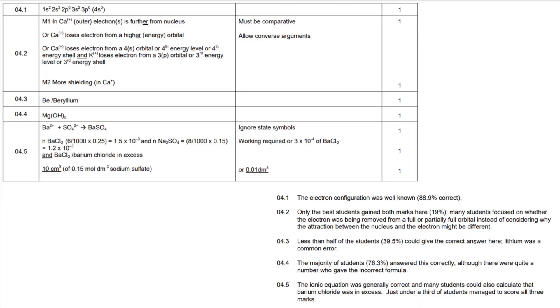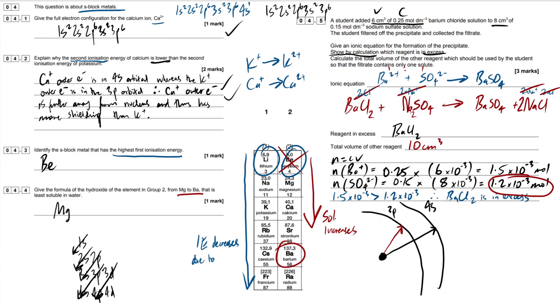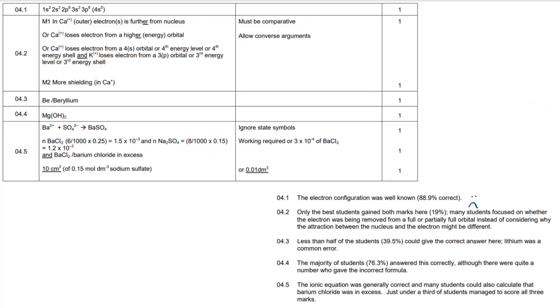So I thought I'd end the video with looking at the mark scheme and the examiner's report. I've been adding this to my videos recently. Hopefully it's useful for you guys. I'm not going to bother with this one because 88.9% got it correct. 4.2. Only the best students gain both marks. 19%. Poor. Many students focused on whether the electron was being removed from a full or partially full orbital instead of considering why the attraction between the nucleus and the outer electron might be different. So for this one, I just remember visualizing it like this, even though this is like a super simple GCSE model. It really helps just understand what's happening here. There's this fat orbital in the way and it's blocking this right here. That's how it works. If you remember it like that, you should be able to word it accordingly. So the outer electron is further from the nucleus. We can see that in the diagram and we can see that there's more shielding.